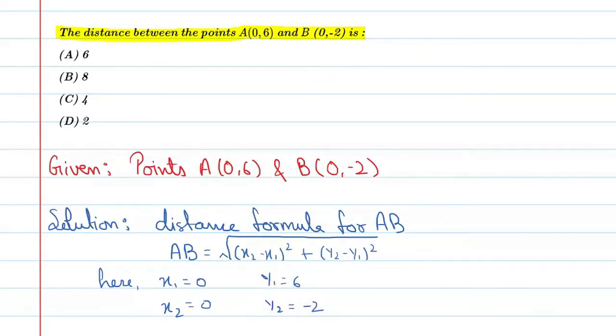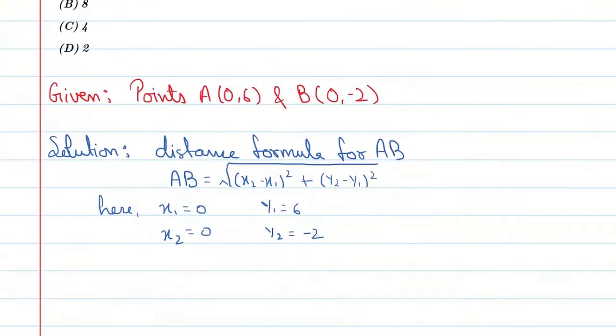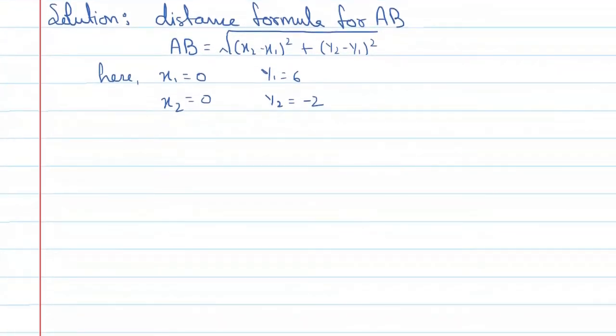Here we can say AB equals the square root of (0 - 0)² plus (-2 - 6)². So it is 0² plus (-8)².